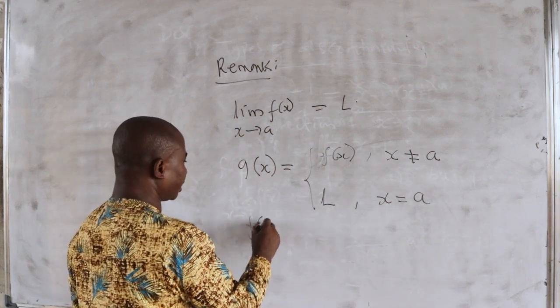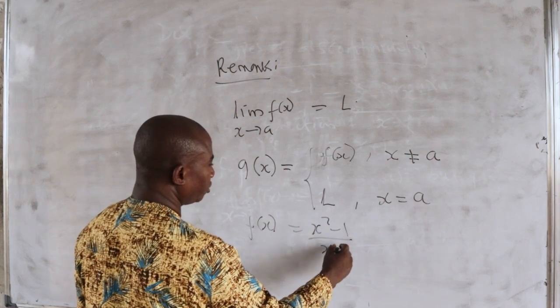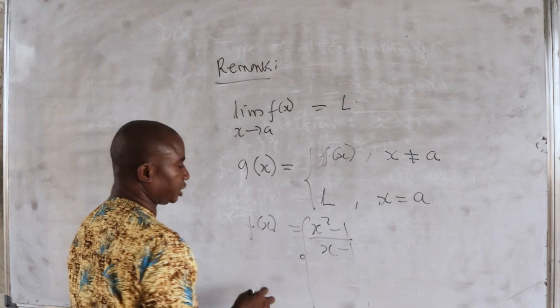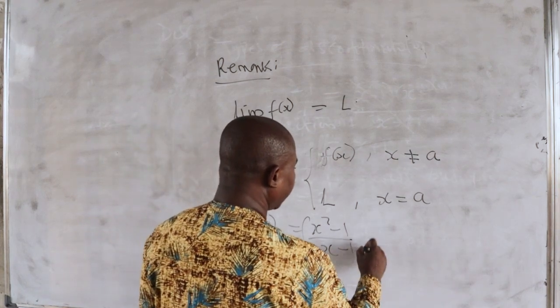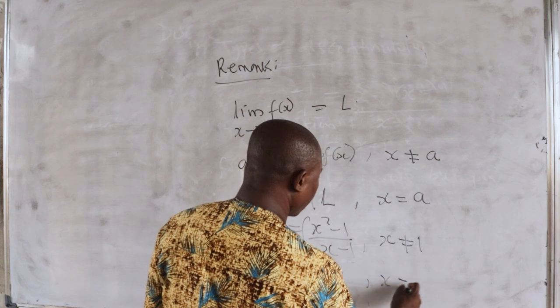We have f(x) is x squared minus 1 divided by x minus 1. So if I now define this to be my g and I call it 2 here when x is not 1, and 2 when x is equal to 1.